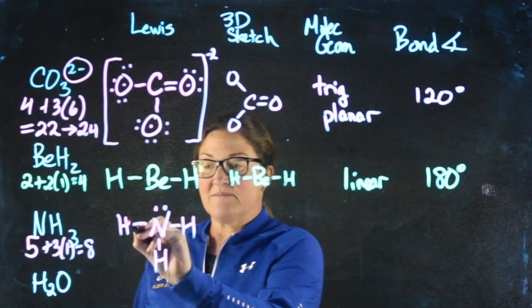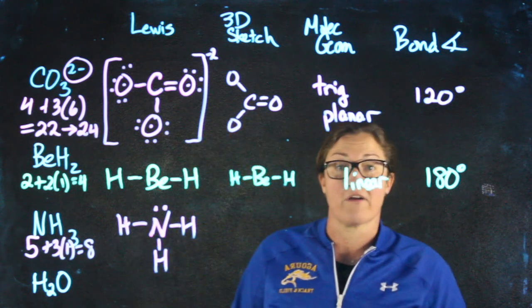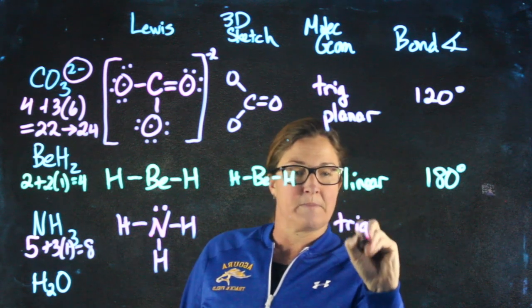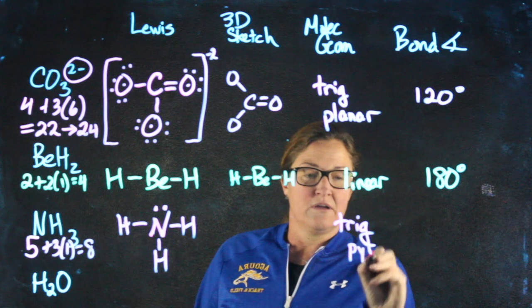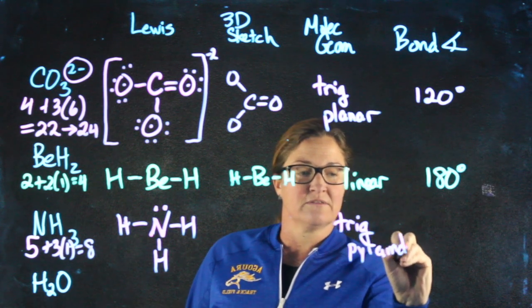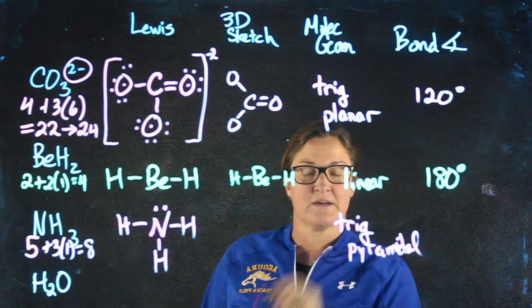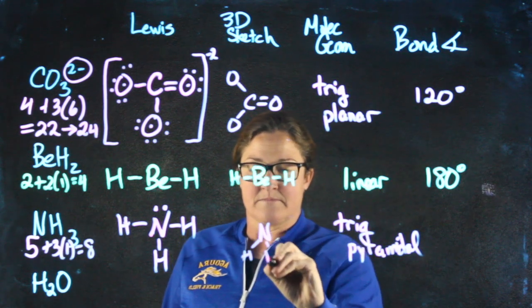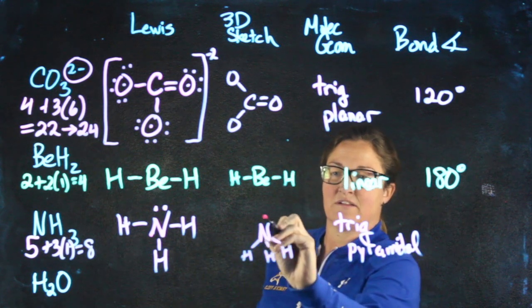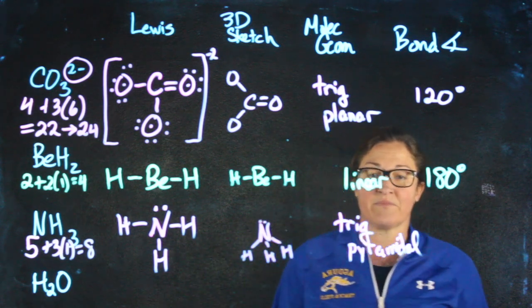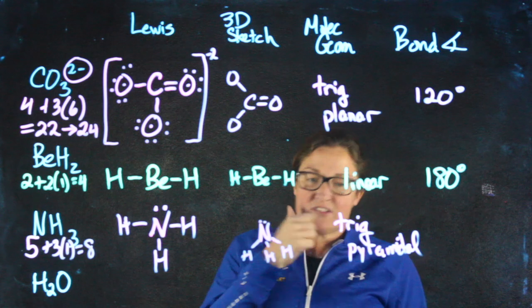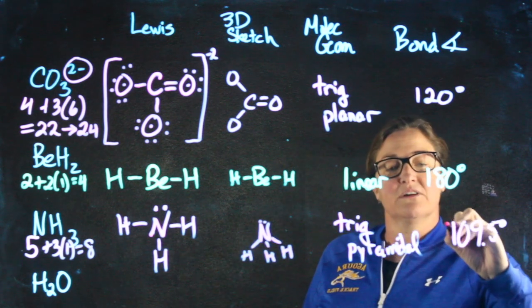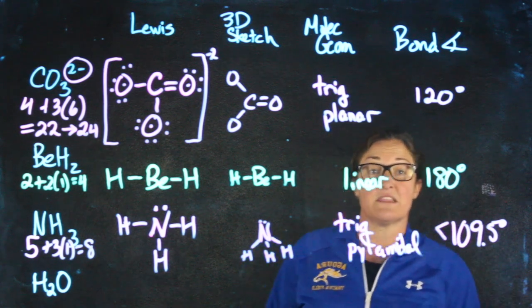Now, I have three atoms attached and one lone pair. Three atoms with one lone pair gives me trigonal pyramidal, or pyramidal, depending on who you ask. In three dimensions, this is going to look like a tripod. The nitrogen is sitting on a tripod of hydrogens with a lone pair as a hat. The bond angle associated with trigonal pyramidal is like that of tetrahedral, but a little bit smaller. So we call it less than 109.5.